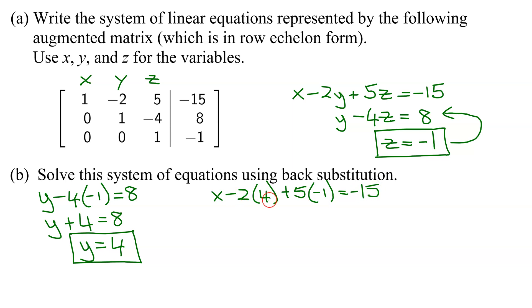Negative 2 times 4 is negative 8, so x minus 8. 5 times negative 1 is negative 5, so minus 5 equals negative 15. Negative 8 and negative 5 is negative 13, so we have x minus 13 equals negative 15. Now adding 13 to both sides, x equals negative 15 plus 13, which is negative 2.